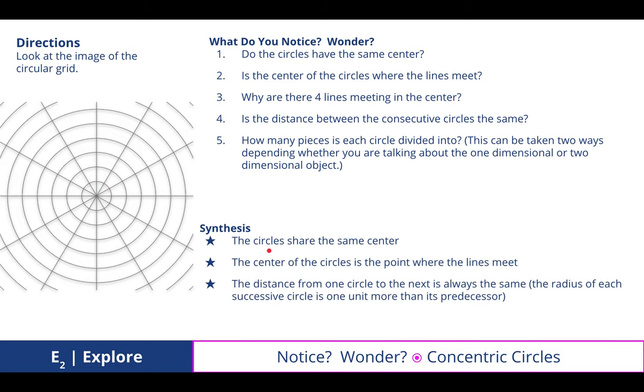To synthesize, the circles share the same center. The center of the circles is the point where the lines meet, and the distance from one circle to the next is always the same, which means the radius of each successive circle is one unit more than its predecessor or the pre-image, the one that came before it.